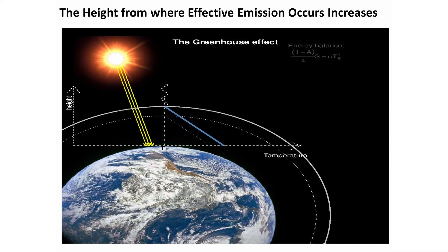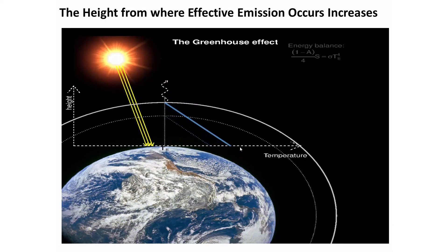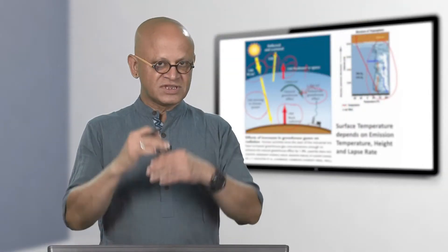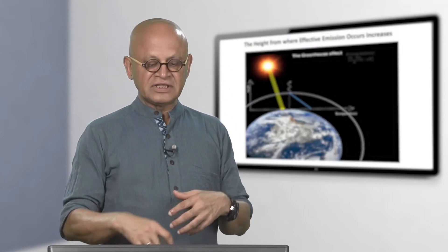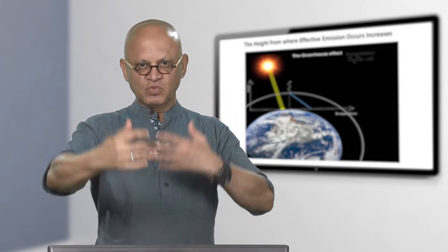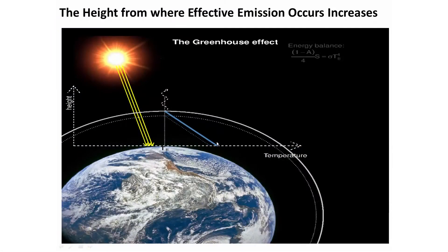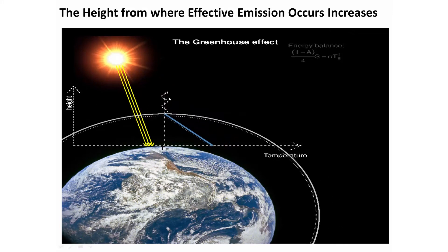Essentially, there is 150 watts per square meter of natural greenhouse effect, and the enhanced greenhouse effect is right now trapping some additional long wave radiation that should go to space. The outgoing is balancing the incoming, but it is being done at a different temperature. This simple animation shows that as greenhouse gases increase, the amount of energy trapped increases. We are still balancing at the top of the atmosphere, but internally we are adjusting things because of the dynamics with which the atmosphere can move energy and emit at a different height.